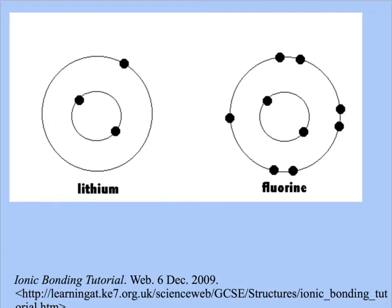If an electron gains energy, so let's say this electron gains energy, it will actually move up to the second level. Once it loses energy, it will fall back to its original state.